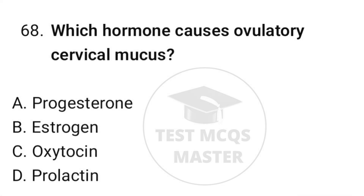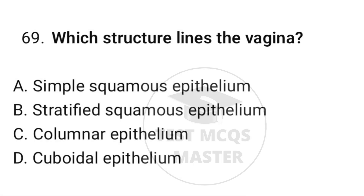Question number sixty-eight: which hormone causes ovulatory cervical mucus changes? The correct option is B, estrogen. Question number sixty-nine: which structure lines the vagina? The correct option is B, stratified squamous epithelium.